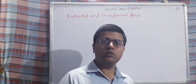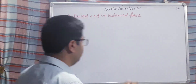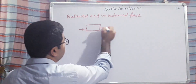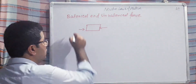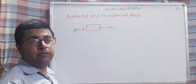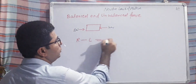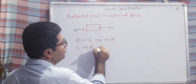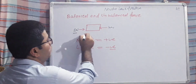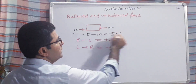Suppose we have a body and two or more forces are acting on it. For example, this body has two different forces: one of 5 newton and another of 10 newton. For simplicity, let's assume the force acting right to left is positive, and the force acting left to right is negative. So the right-to-left force is +5 newton and the left-to-right force is -10 newton, giving a total force of -10 newton.